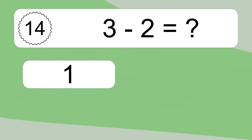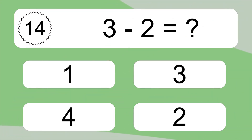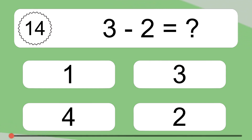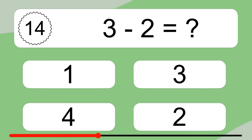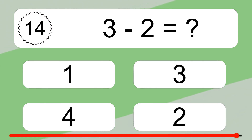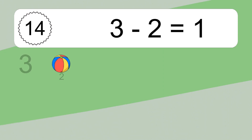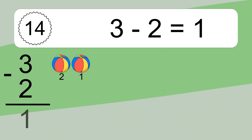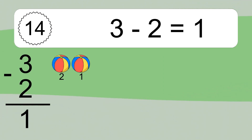3 minus 2 equals what? 3 minus 2 equals 1. Let's count it. 2, 1.